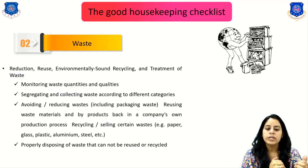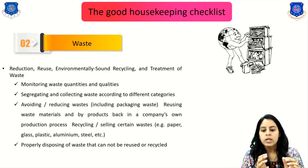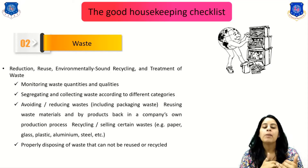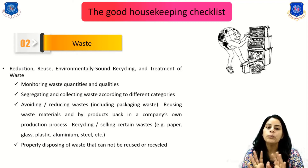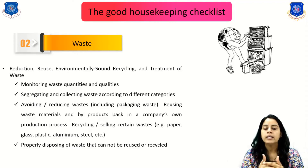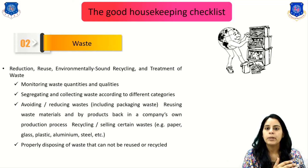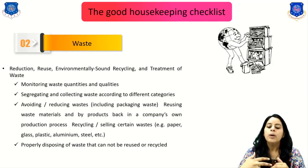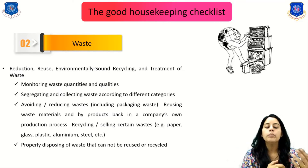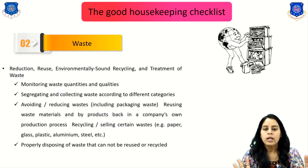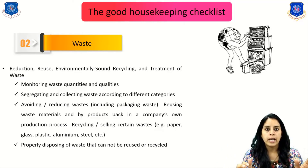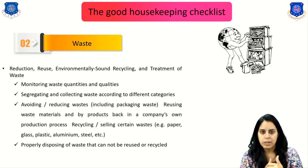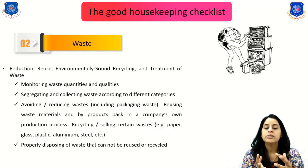Waste management also involves avoiding or reducing waste including packaging waste, reusing waste materials and by-products back in the company's own production process, recycling and reselling sorted waste such as paper, glass, plastic, aluminum, and steel. Waste that cannot be reused or recycled must be properly disposed of using processes such as landfilling, incineration, pyrolysis, and others previously covered in the chapter on solid waste management.